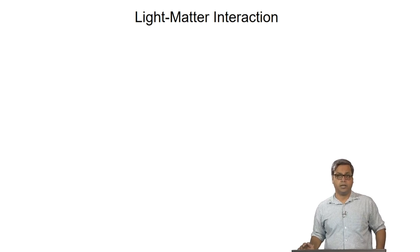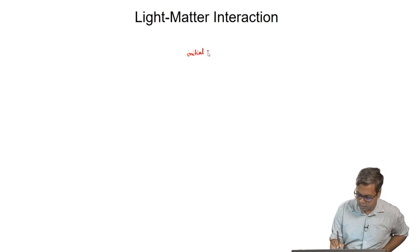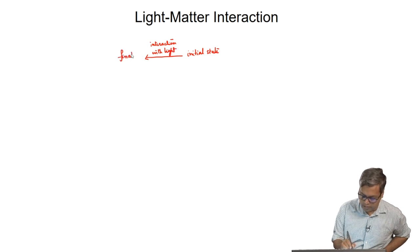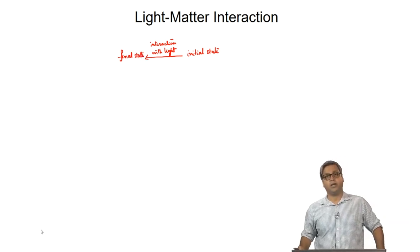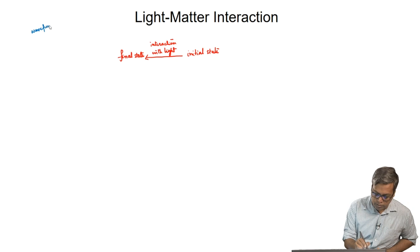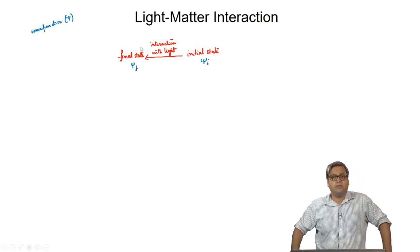A spectroscopic process can be represented as: there is an initial state that interacts with light, and there is a final state. According to quantum mechanics, the states can be represented by a wave function psi. Let psi_i and psi_f be the wave functions of the initial and the final states respectively.